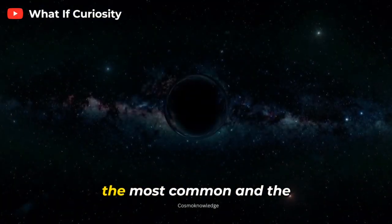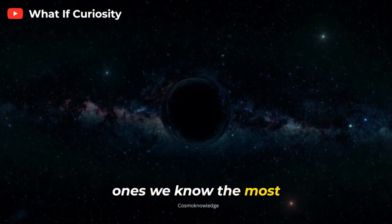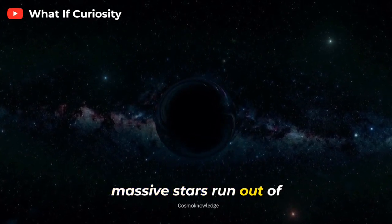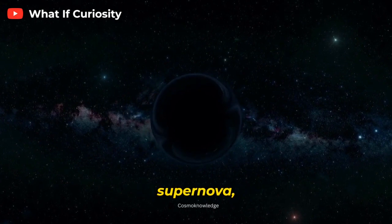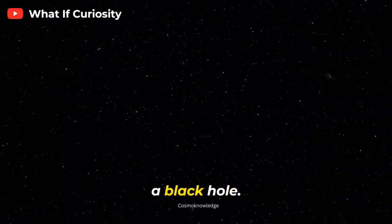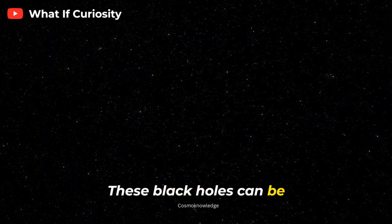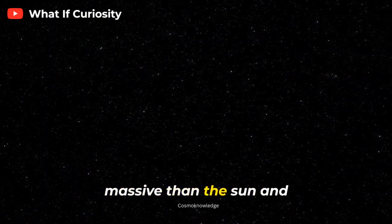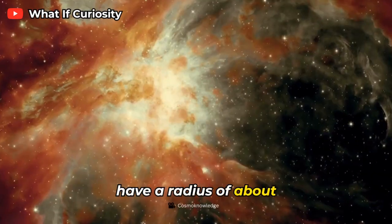Stellar black holes are the most common, and the ones we know the most about. They are formed when massive stars run out of fuel and explode in a supernova, leaving behind a dense core that collapses into a black hole. These black holes can be up to 20 times more massive than the sun, and have a radius of about 30 kilometers.